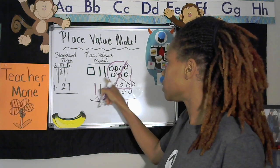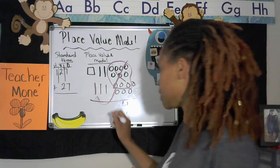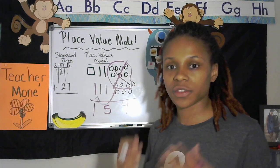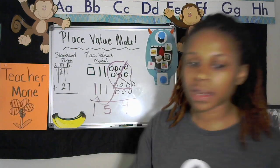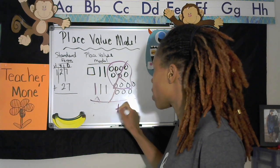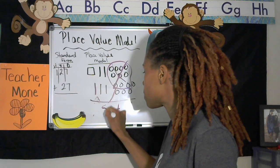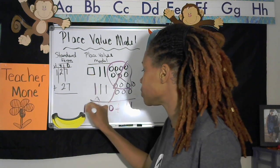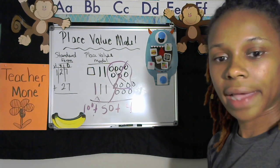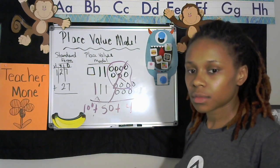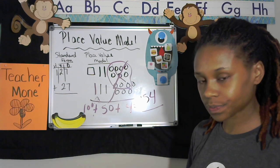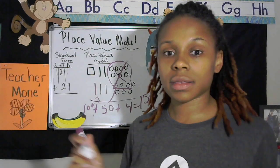In the tens place I now have one, two, three, four, five tens — so that's 50. And I have 100 left. So I have 154. In expanded form: four ones plus five tens (10, 20, 30, 40, 50) plus 100 equals 154.